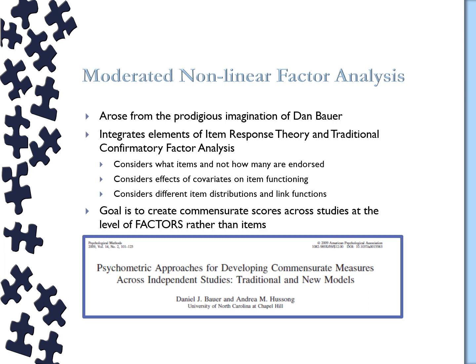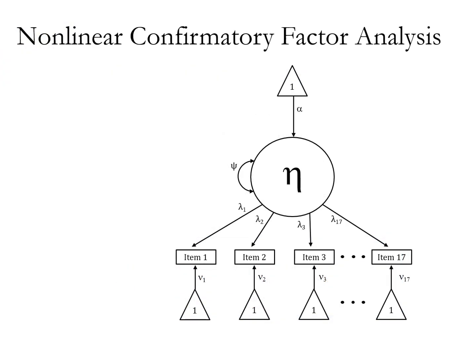But the goal for us in IDA is not so much to understand all those measurement nuances, but to get to the end where we account for them and are able to create commensurate scores across studies at the level of the factors rather than at the level of the items. So I'm not so interested in saying whether every item is equivalent across studies as I am in saying: can I come up with a depression measure that's getting at the same thing the same way in general for everybody in my studies?